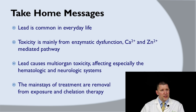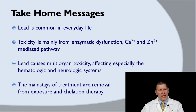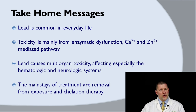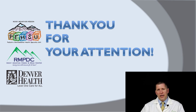To wrap things up: lead is common in everyday life and still has its place in our society. The toxicity of lead is mainly because it impairs the function of certain enzymes that use calcium and zinc in their pathways. Lead is a multi-organ toxin, but the most important toxicities are to the brain, the peripheral nervous system, and the bloodstream. The mainstay of treatment is prevention, and if prevention has failed, then removal from exposure along with chelation therapy. Thank you for spending your time with us. On behalf of the Rocky Mountain Poison and Drug Center and the Pediatric Environmental Health Specialty Unit, Rocky Mountain, thank you very much for your time and attention today.